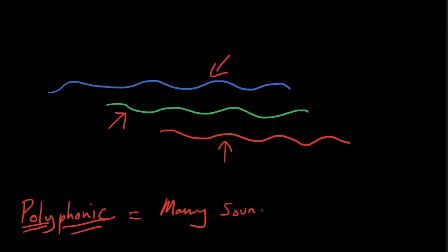So a polyphonic texture is one where there are many different strands of the music that have their own kind of independent identity. So a round is a really good example of that.